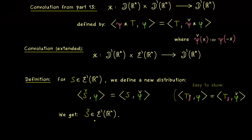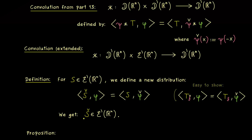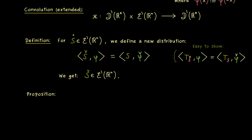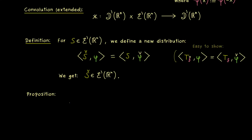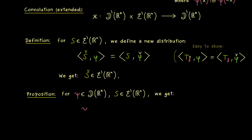Now we can use such a distribution with compact support in our original definition of the convolution. We take a test function psi and a distribution of compact support s. In this case we have two things with compact support, so the new distribution the convolution gives us should also have compact support. In fact, we get even more: psi star s.check is always a regular distribution — and taking the check or not does not change this — which we can represent by an ordinary function.